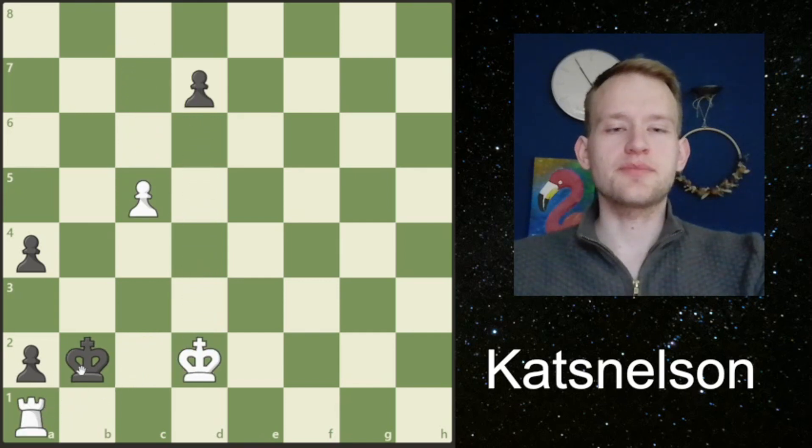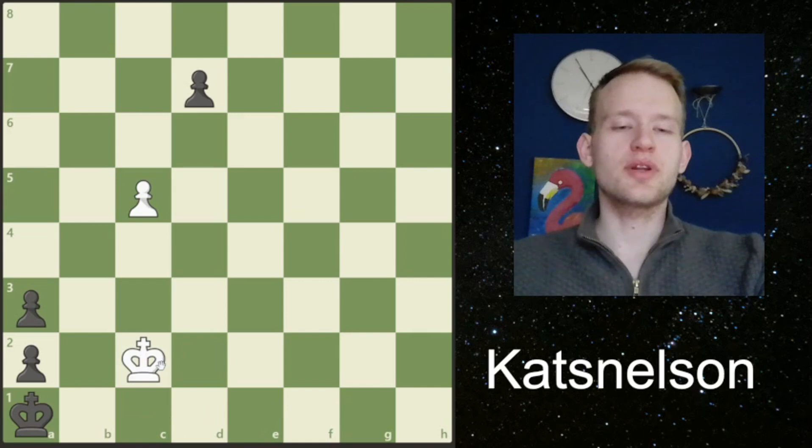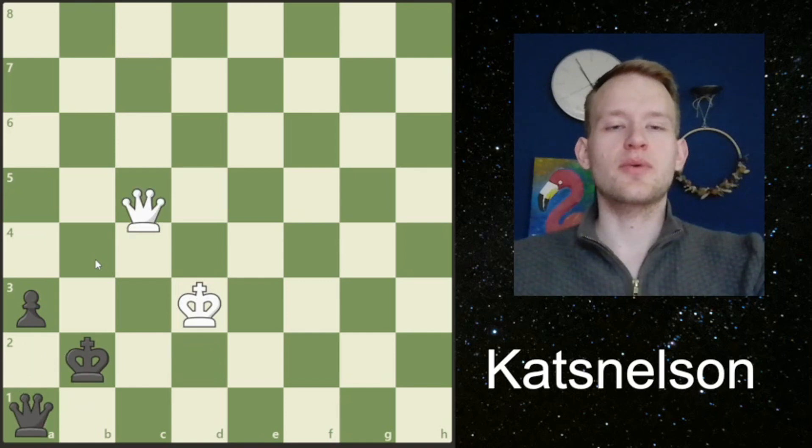This is the reason why, after king takes a1, we have to play the precise move, which is not king to c2, but king to c1. Then, only now we go to c2. It's essentially the same that we've seen before. We get a checkmate here.